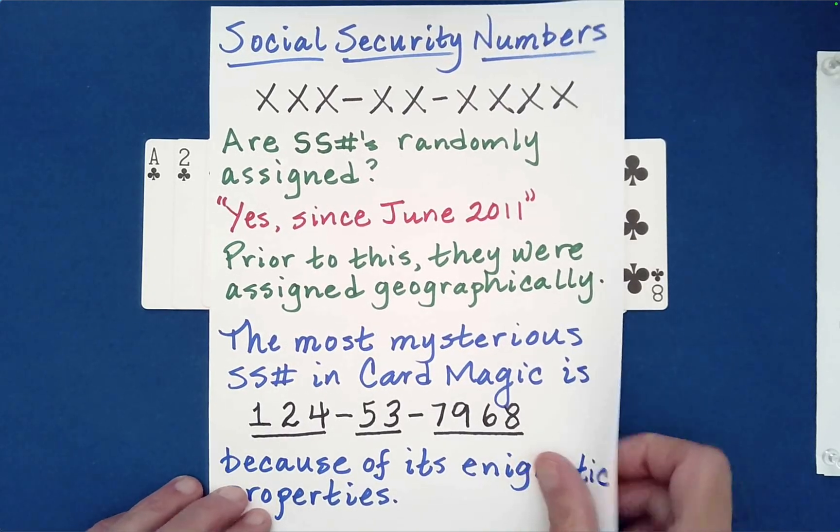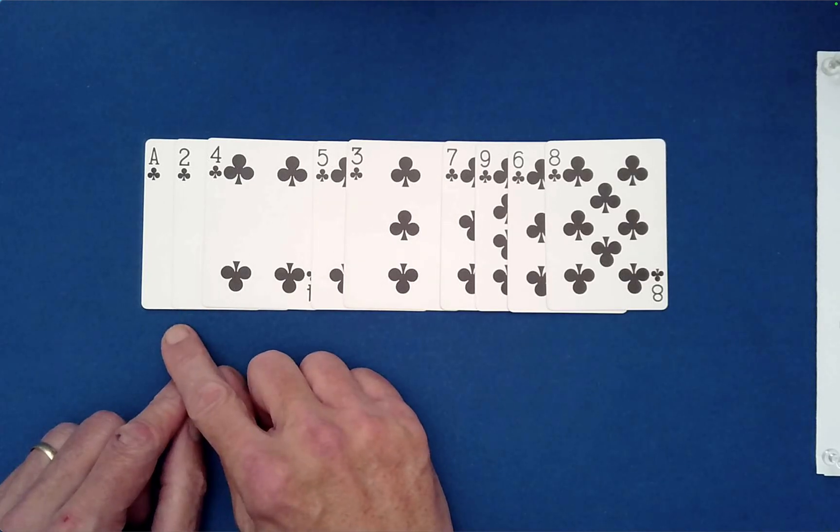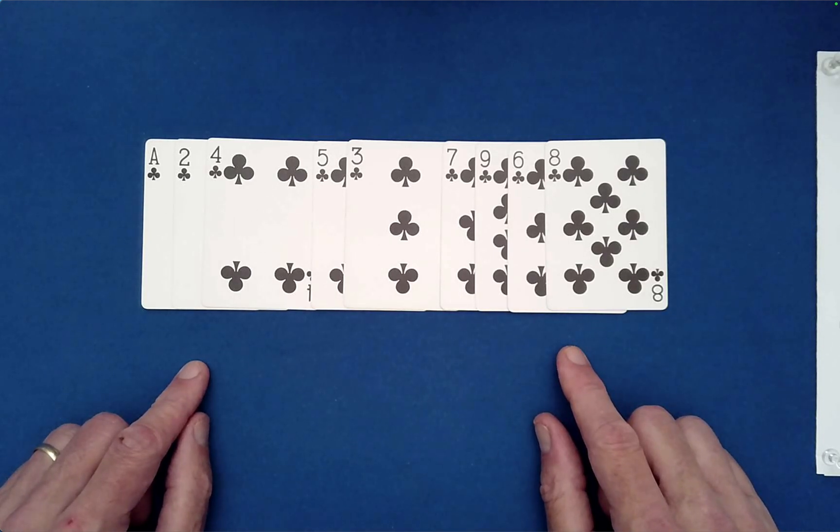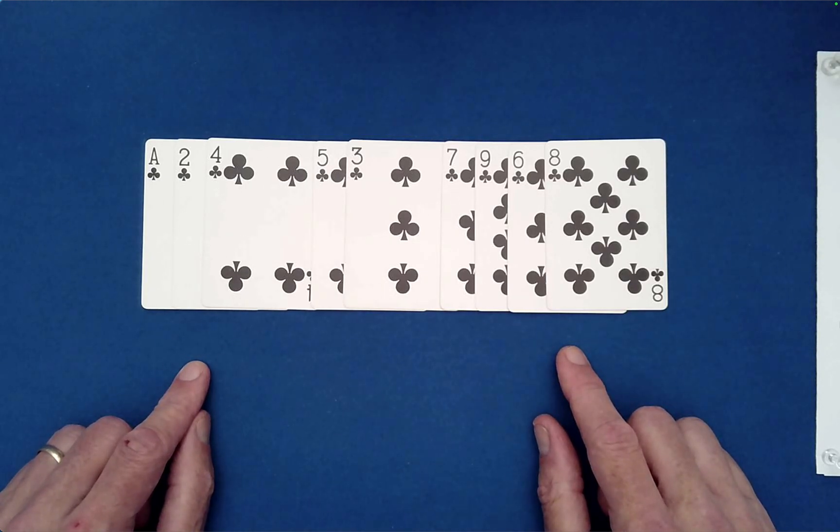So the social security number we're looking at is 124537968. Anyone who has followed my channel knows that I have often referred to the under-down deal or under-down shuffle as the most destructive of all systematic mixing procedures. It's one of the few that destroys the virtually indestructible BESSI and quasi-BESSI sequence packet structures. But for some unknown reason, this particular social security number paired with the under-down shuffle produces amazing magic.